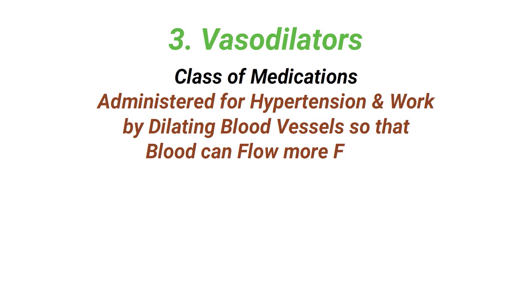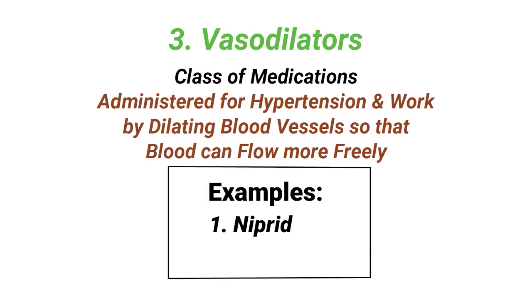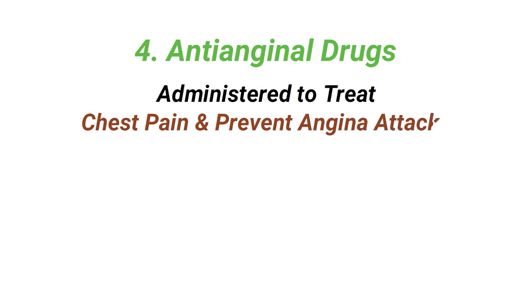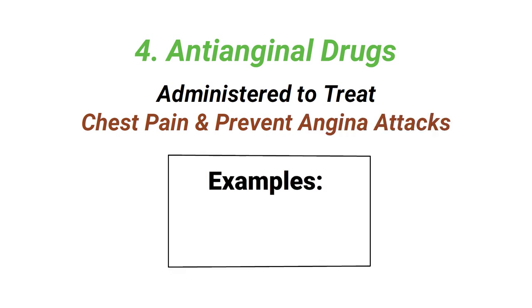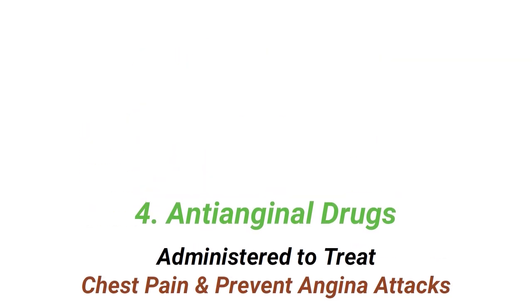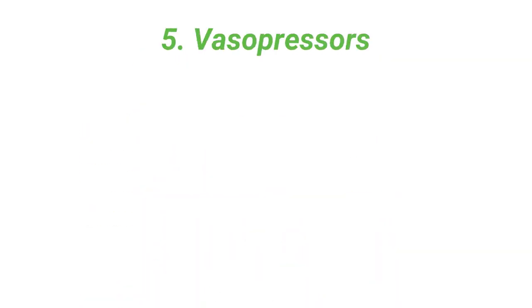Vasodilators are a class of medication that are administered for hypertension, and they work by dilating blood vessels so that blood can flow more freely. Some examples include nitride and primacore. Anti-anginal drugs are administered to treat chest pain and prevent angina attacks. Some examples include nitroglycerin and isordil.